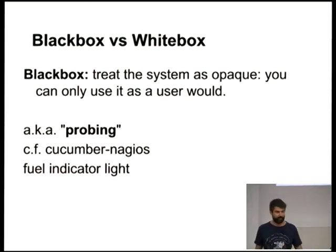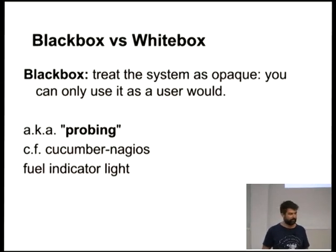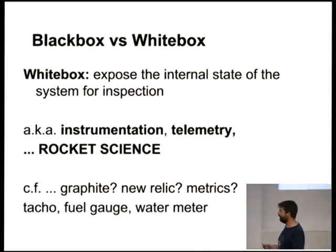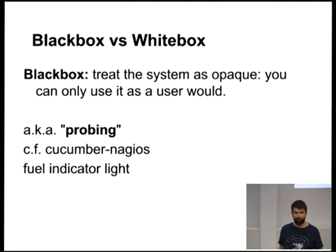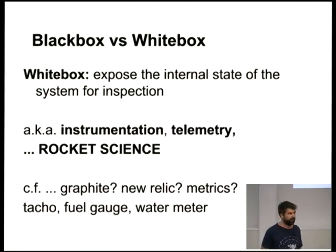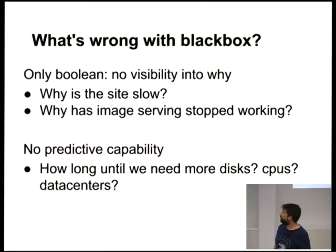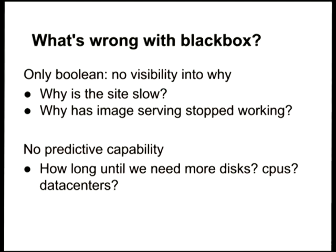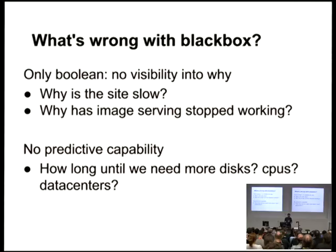When I talk about black box, I mean we're treating the system as a black box — we're poking it at the interface we've exposed, acting against it as a user would, trying to emulate the user experience. White box is where we look inside the system itself and pull out all the telemetry data. A real-world example: black box monitoring is a fuel indicator light on your car dashboard, whereas the tachometer is actually telling you how fast the engine is rotating. Black box only gives you a boolean — whether the test passed or not — it doesn't tell you why sites are slow, why image serving stopped, or give you any predictive capability about how much capacity you have left.